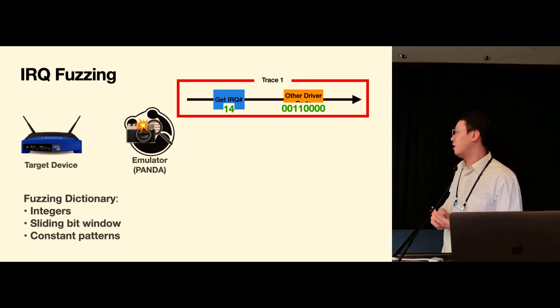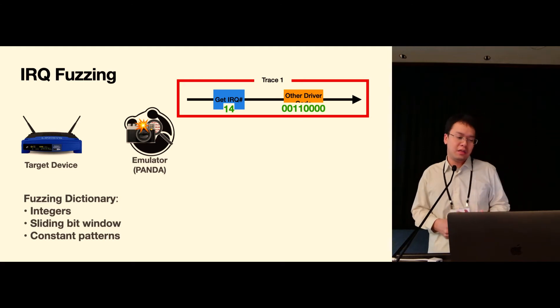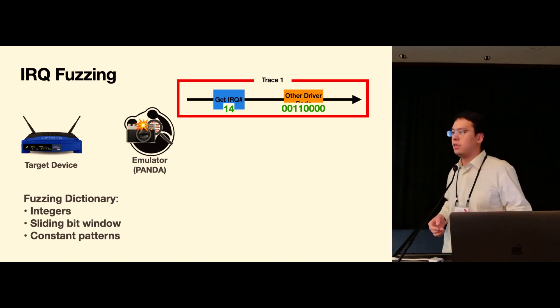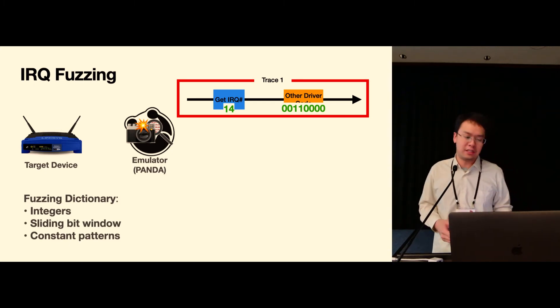And we would feed these values one after another during the execution so that in the end we can see whether we've gained any new coverage through this execution, so that we can decide whether we want to keep this trace or just simply discard this trace.